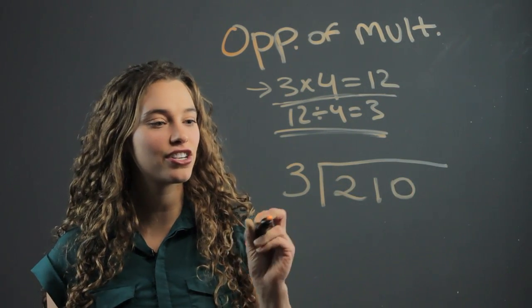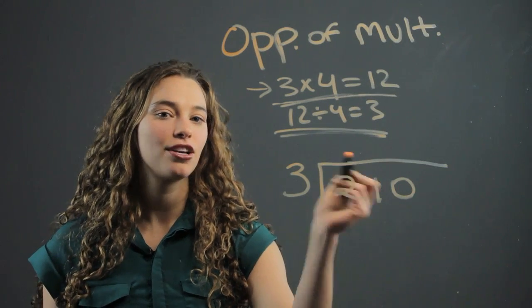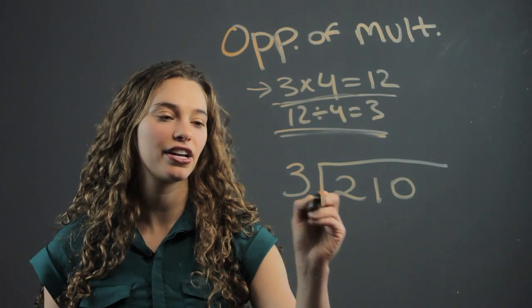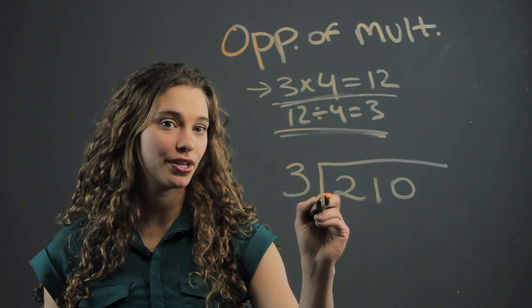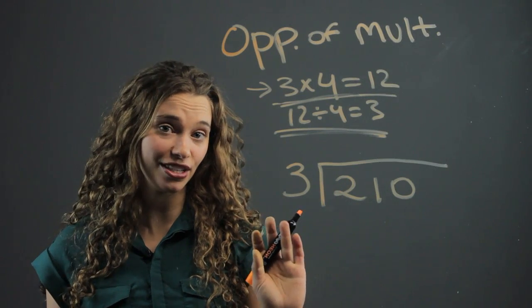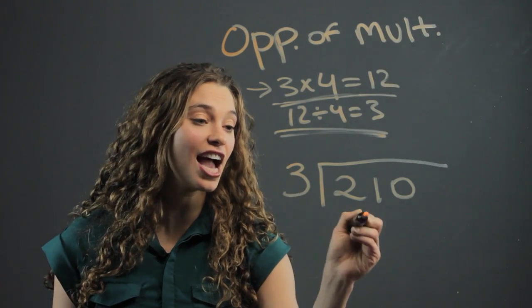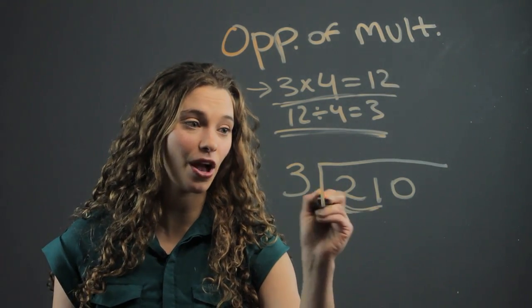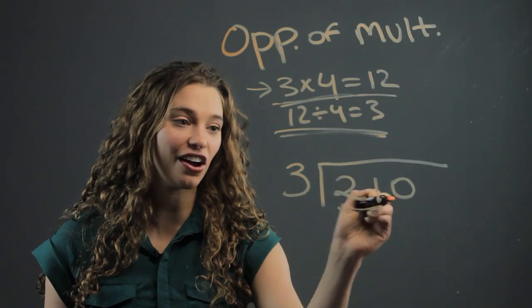What you always want to make sure they do is line everything up. So they start with the first number. Does three go into two? No, three does not go into two. So we look at the next two numbers together. We always include the first number from then on.